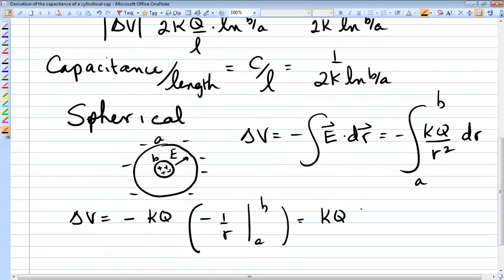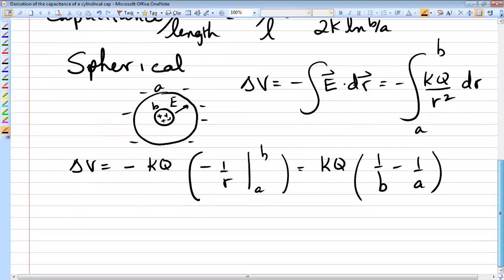And so this delta V will be negative kQ times negative 1 over r between A and B. So it's kQ times 1 over B minus 1 over A, which again is a negative quantity because the outer sphere is at a lower potential than the inner sphere.